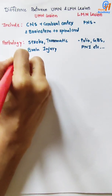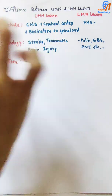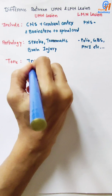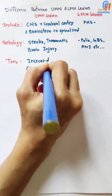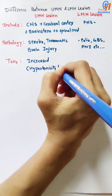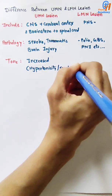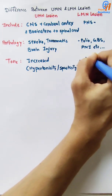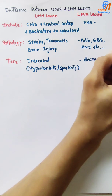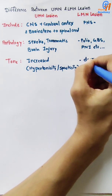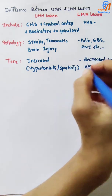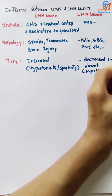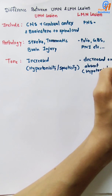Now, regarding tone: in upper motor neuron lesion, the tone is increased — hypertonia or spasticity is seen. In lower motor neuron lesion, the tone is decreased or absent — hypotonia or flaccidity is seen.